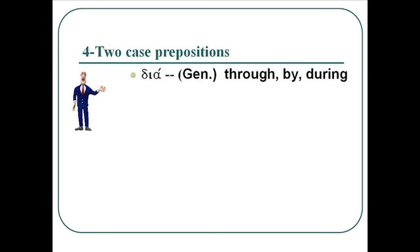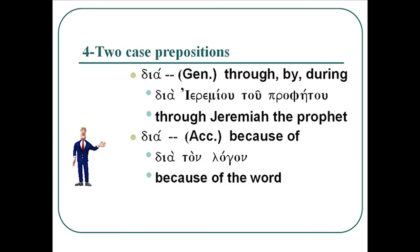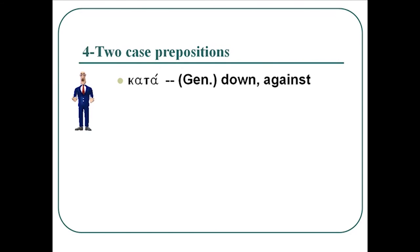Now we've got four prepositions that take two cases. διά (dia) with the genitive means through, by, or during — check out the English word 'diameter,' which goes through the middle of the circle. An example is διὰ Ἰερεμίου τοῦ προφήτου — 'through Jeremiah the prophet.' διά with the accusative means because of; an example is διὰ τὸν λόγον — 'because of the word.' διά ends in a vowel, so when followed by a vowel-initial word like αὐτόν, the alpha drops: δι' αὐτόν — 'on account of him.'